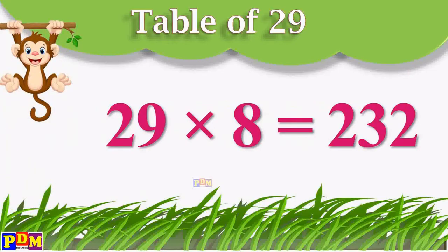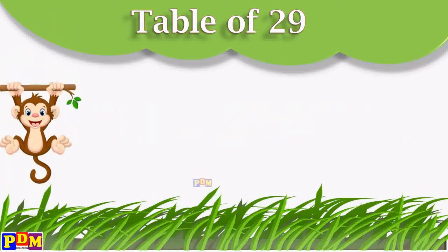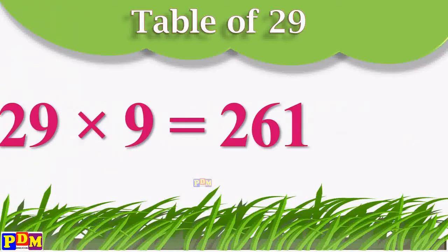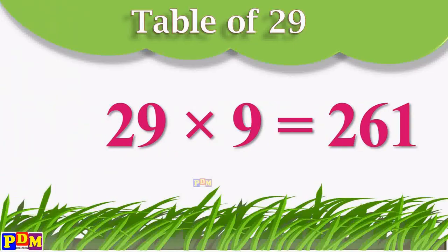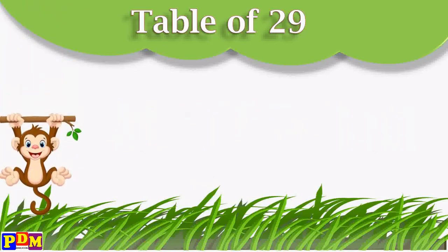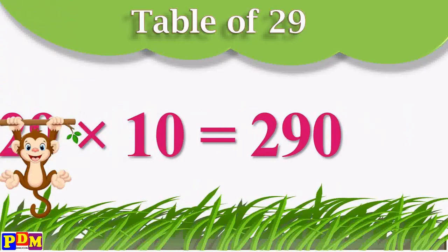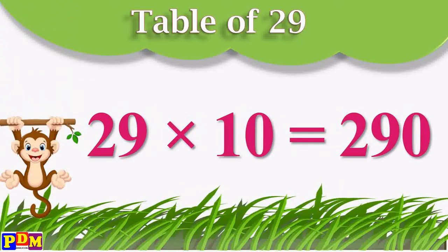29 eights are 232. 29 nines are 261. 29 tens are 290.